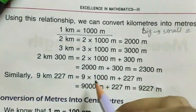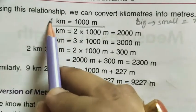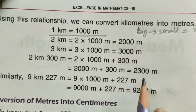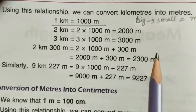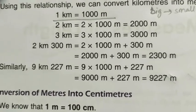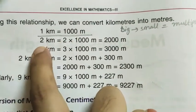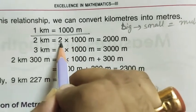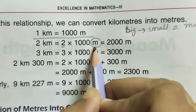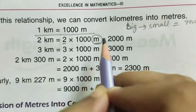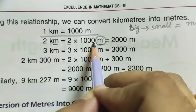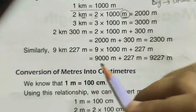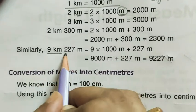So one kilometer is equal to one thousand meters. If it is two kilometers, then two multiplied by one thousand; three kilometers is three into one thousand, and so on. If we have to convert kilometer into meter, we multiply the kilometer value by one thousand. For example: 9 kilometers 227 meters.